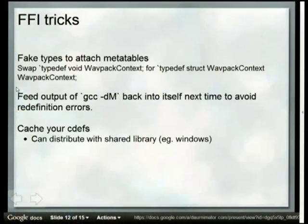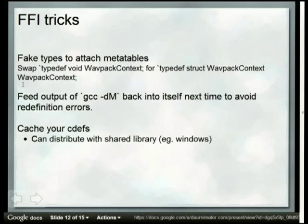A few tricks with the FFI: you can pretend a type is a different type. Say you get a void* back from a library — using libWavPack as an example — you can make it into an opaque type, and the FFI doesn't care what it's passing around. You can attach type information because otherwise it gets mapped to void and you can't attach type information to void. To avoid redefinition errors, every time you run GCC -dM you feed it back into itself on top of the next input file. Once you've made these definitions for each shared object or library version, you can distribute them with your executable.